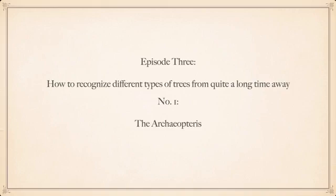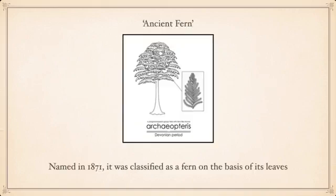Number one: the Archaeopteryx. Not to be confused with Archaeopteryx, which means 'ancient wing.' This ancient fern, as the name translates to, was named in 1871 and was first classified as a fern on the basis of its leaves, which, you gotta admit, do look pretty fern-like.